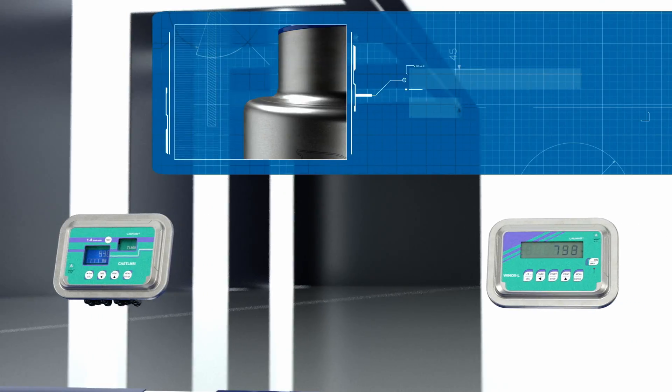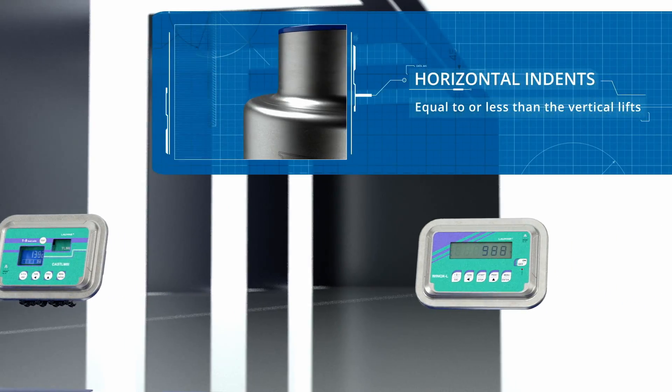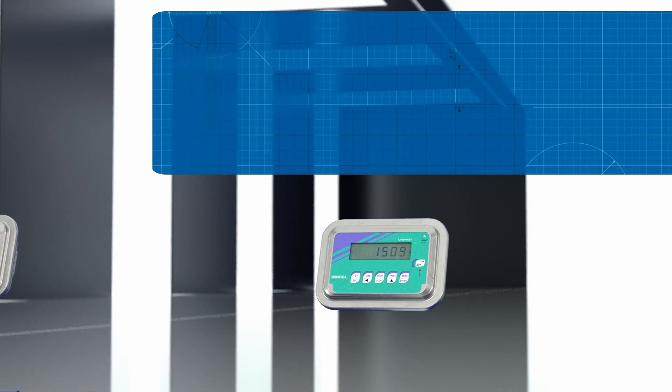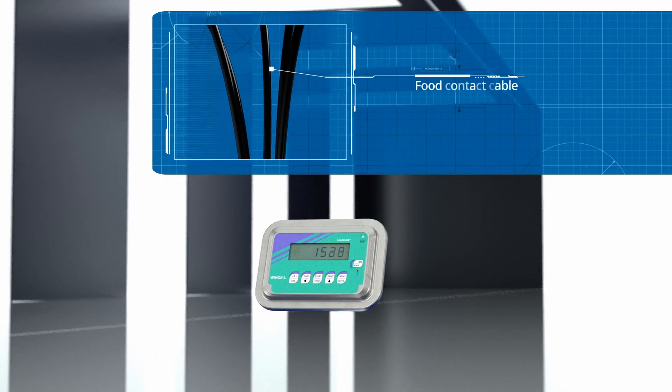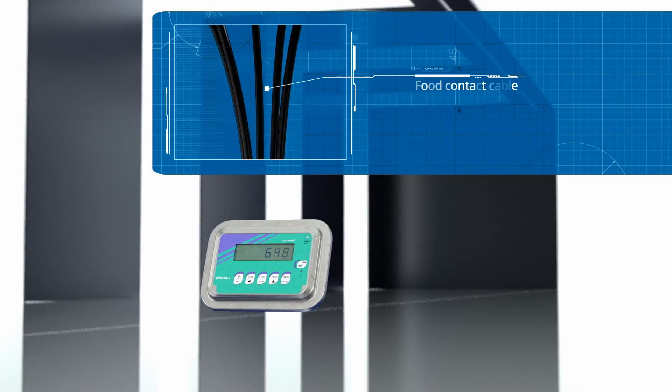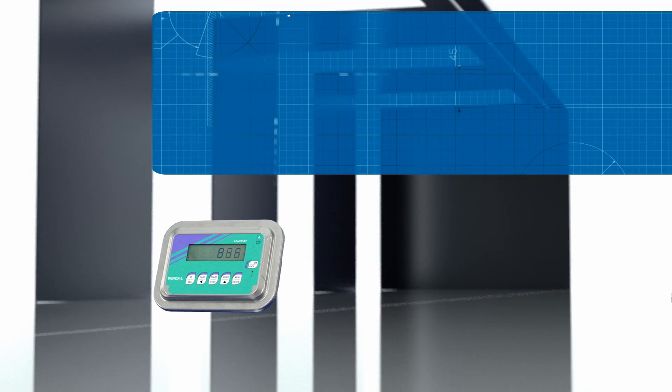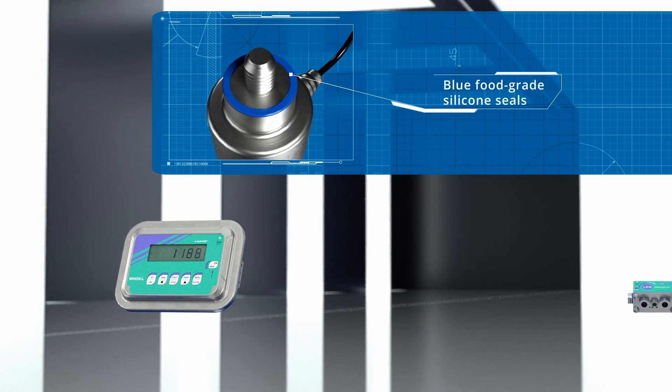The corners are joined up with horizontal indents equal to or less than the vertical lifts. They also feature a food contact cable and blue food-grade silicone seals, which are easily visible in the event of losing any fragments.